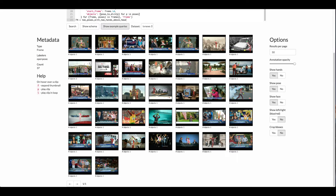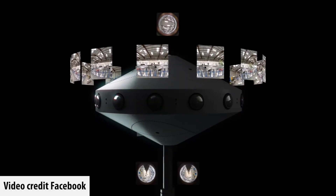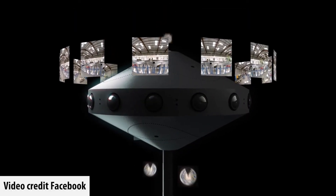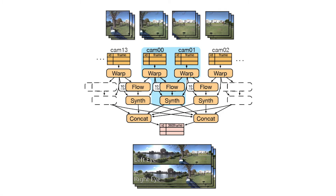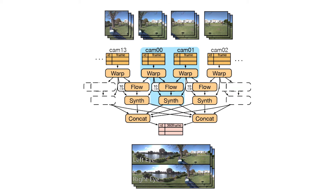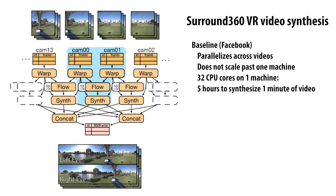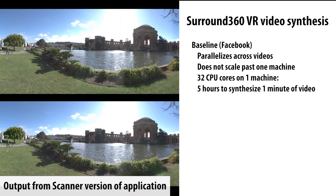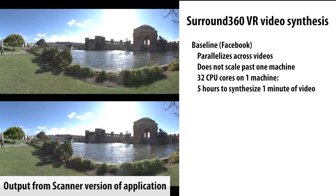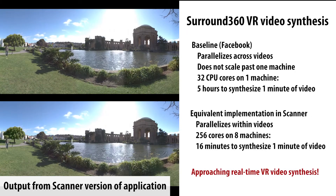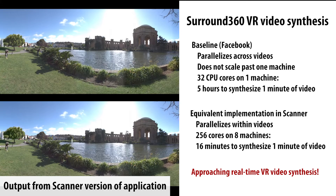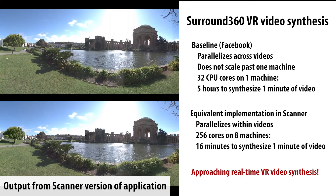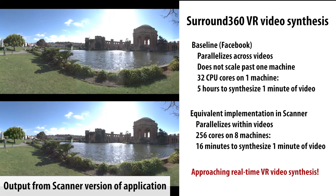Lastly, we implemented the Facebook Surround360 VR video synthesis pipeline in Scanner. This application is a 44-stage Scanner computation graph that fuses 14 streams of 4K video. The existing implementation cannot scale past one machine and takes 5 hours to synthesize a minute of VR video. However, because Scanner can parallelize not just between videos but within videos, the Scanner implementation of the same pipeline could use 256 cores spread across 8 machines, synthesizing 1 minute of footage in only 16 minutes of wall clock time, and further scaling could permit real-time synthesis of VR video.